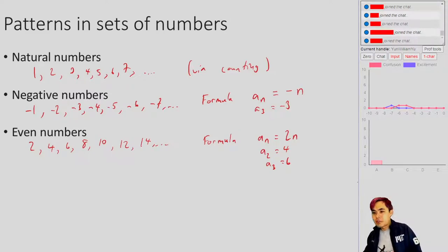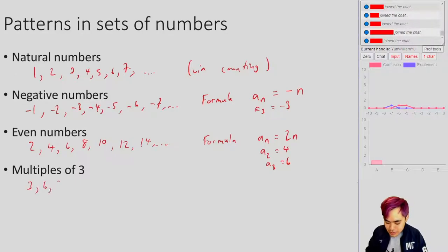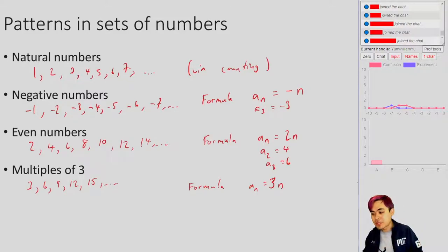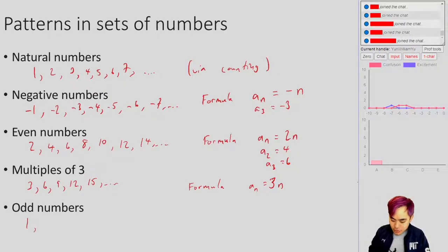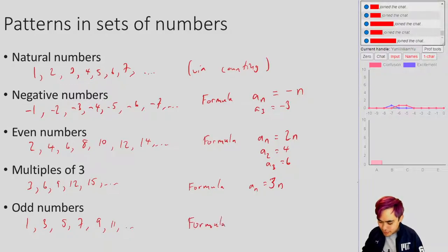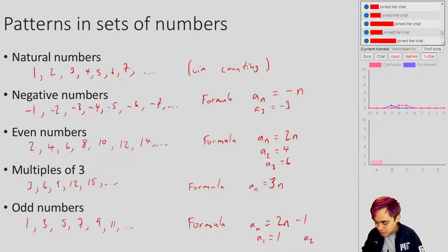Other sets of numbers - you can keep on doing the same thing. For multiples of 3, that's 3, 6, 9, 12, 15, and so on. The formula here should be pretty obvious: a_n is equal to 3n. For the odd numbers - 1, 3, 5, 7, 9, 11, and so on - you get a formula that is a_n is equal to 2n minus 1. So the first odd number is 1, the second odd number is 3, and so on.